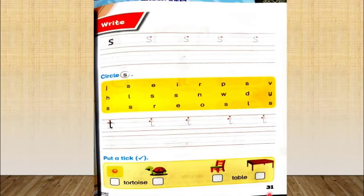Now open your books page number 31 and write. First of all you are supposed to trace, and then do independent writing on the second line. Start from the grass line and write.